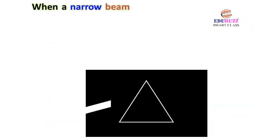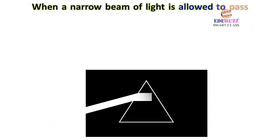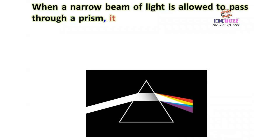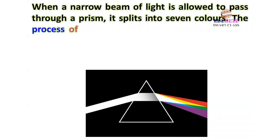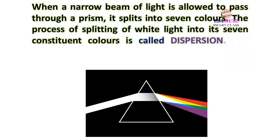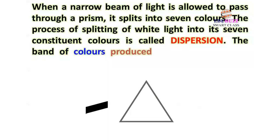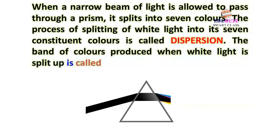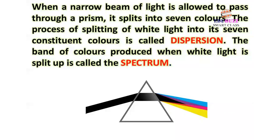When a narrow beam of light is allowed to pass through a prism, it splits into seven colors. The process of splitting of white light into its seven constituent colors is called dispersion. The band of colors produced when white light is split up is called the spectrum.